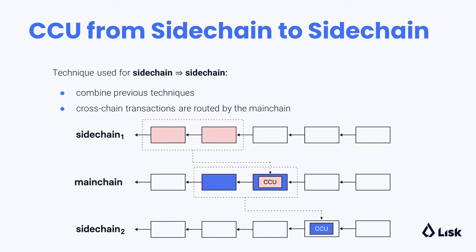Finally, we can combine these techniques together to achieve communication from a sidechain to another sidechain. In this case, cross-chain transactions from sidechain 1 are included in a cross-chain update posted on the main chain, and then another cross-chain update from the main chain to sidechain 2 will also contain these cross-chain transactions, which will finally reach sidechain 2 where their effects will be applied. We see here a very important feature: cross-chain transactions will be routed by the main chain even for sidechain-to-sidechain communication.